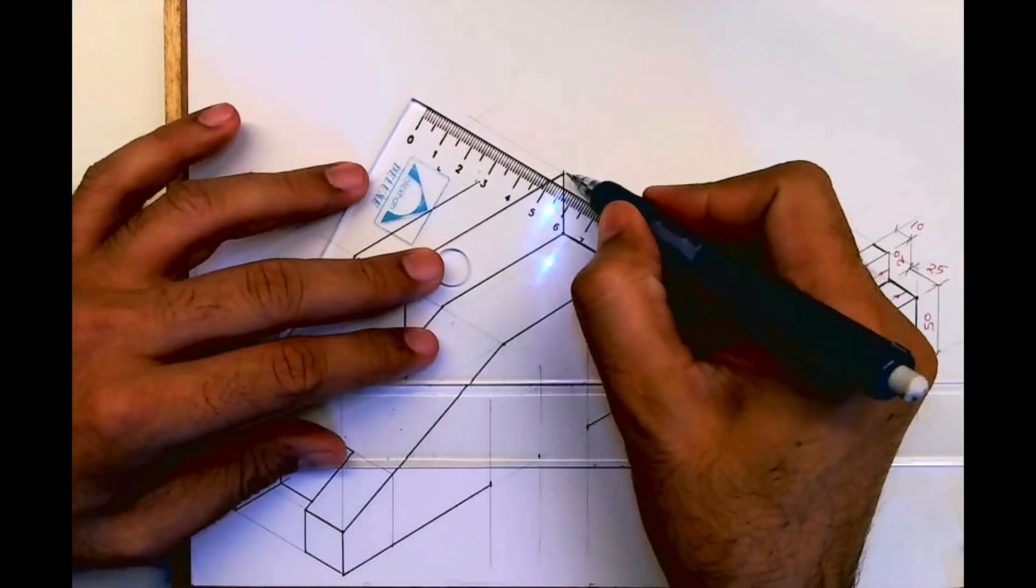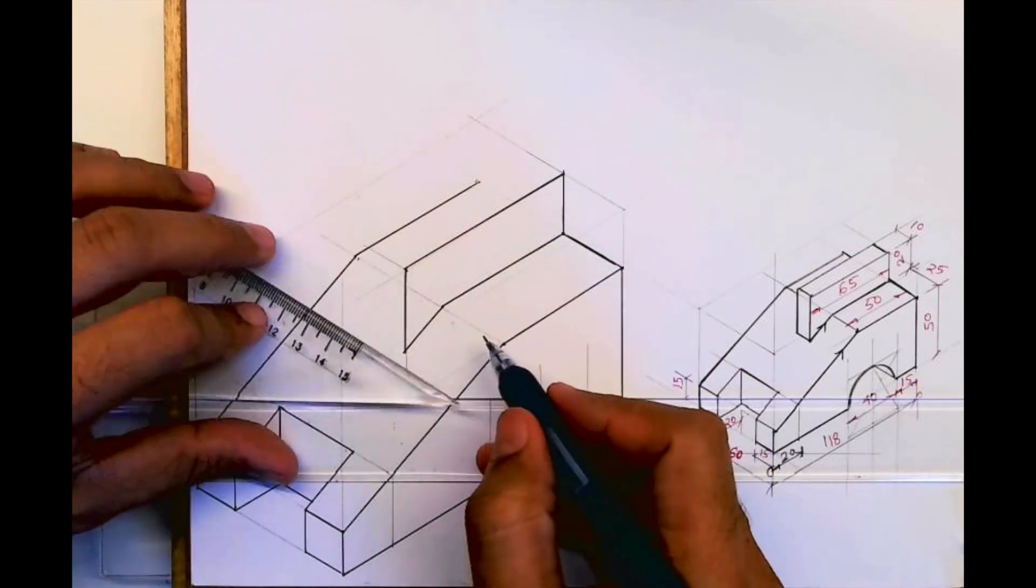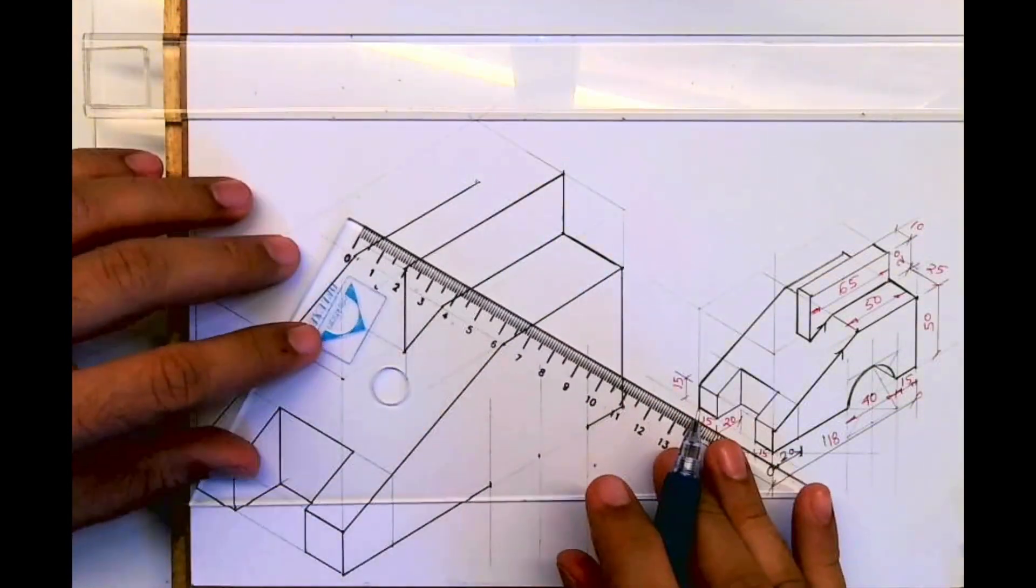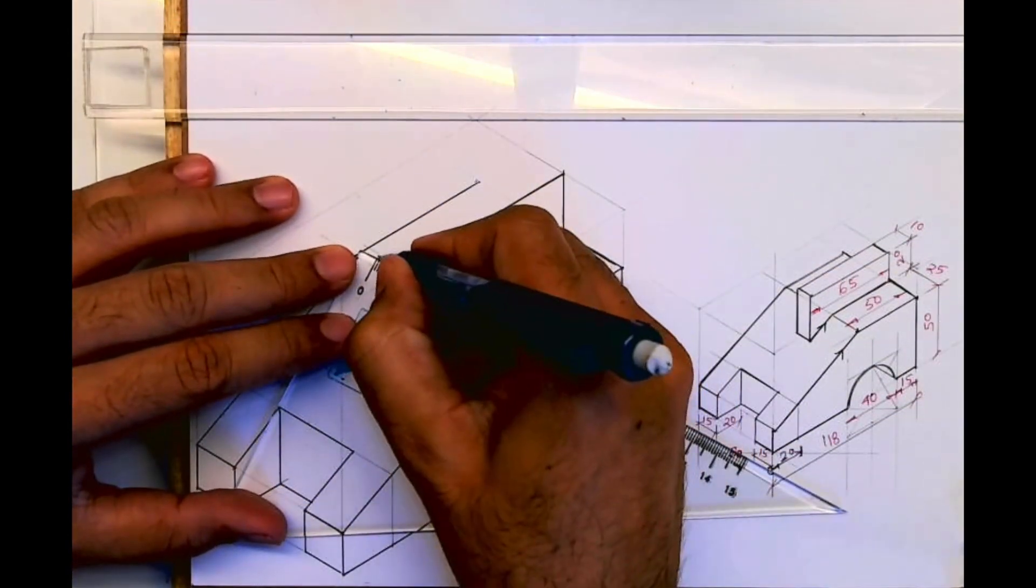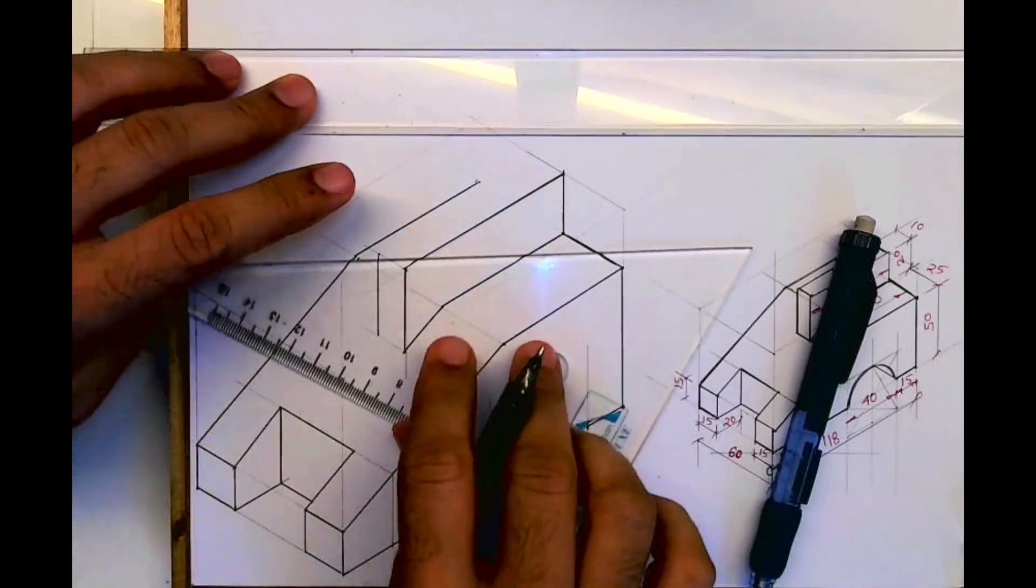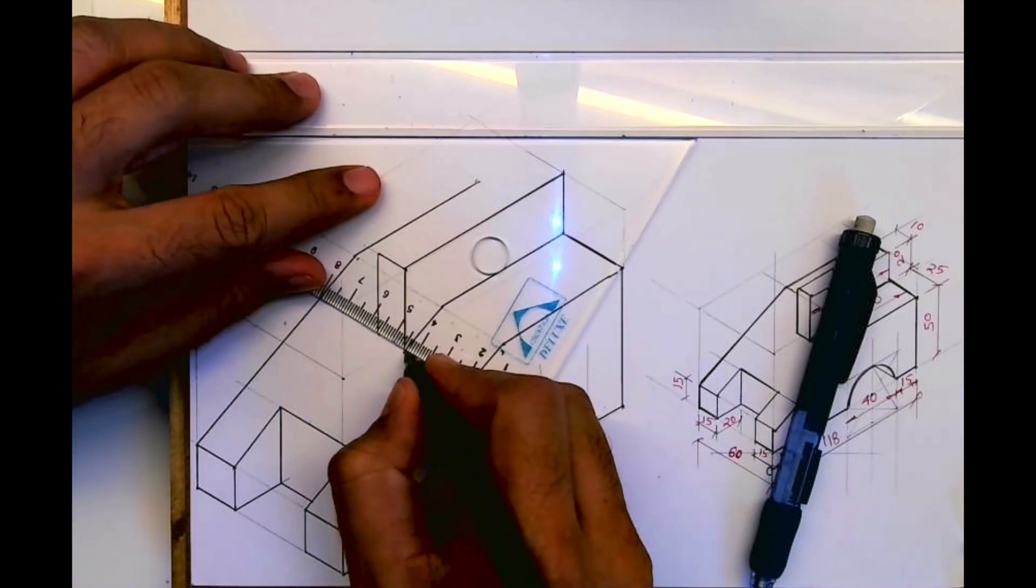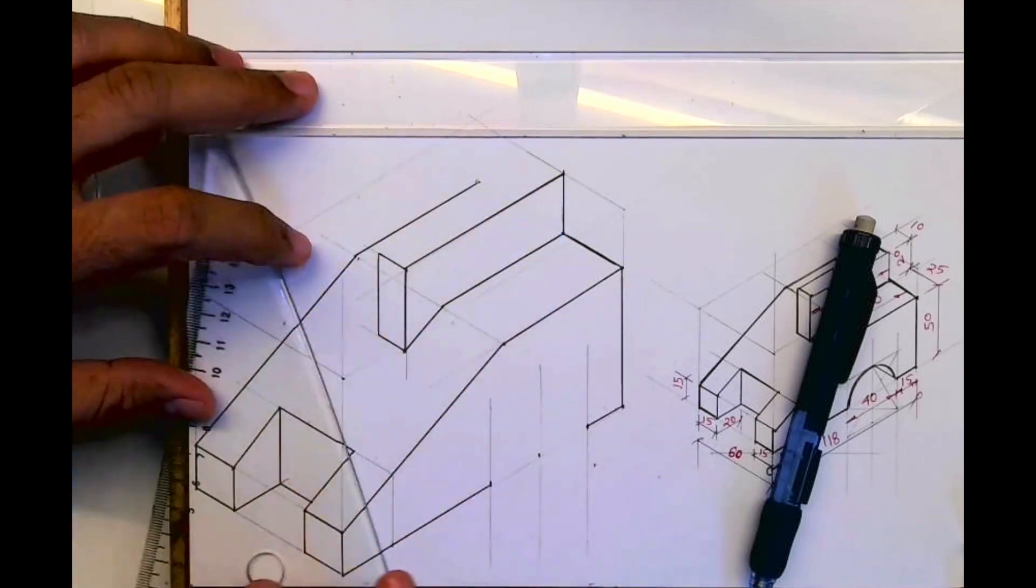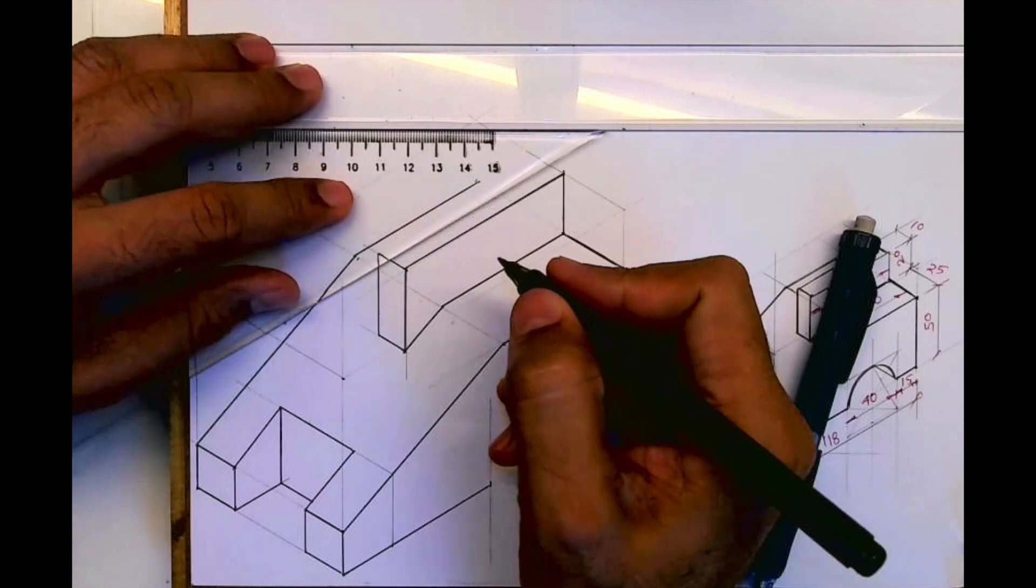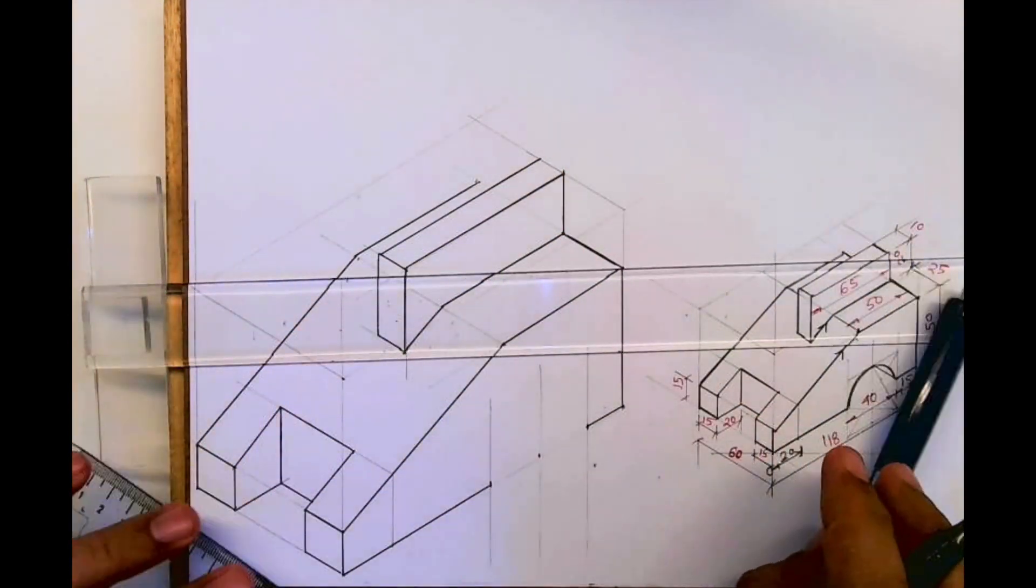Then you take 10 mm, then you take 10 mm, and you draw a parallel line to this. So you will be able to complete that top portion.